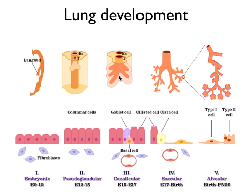In the canalicular phase, the columnar cells slowly start to develop into more specialized epithelial cells. You start seeing ciliated epithelial cells, goblet cells, and also basal epithelial cells. In the saccular phase, when there's a first hint of alveoli, the Clara cell — which we now call the club cell — starts to develop. And then in the last phase, the type 1 and type 2 alveolar epithelial cells develop.